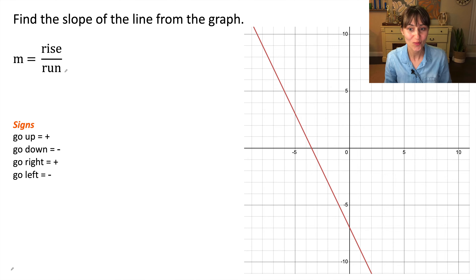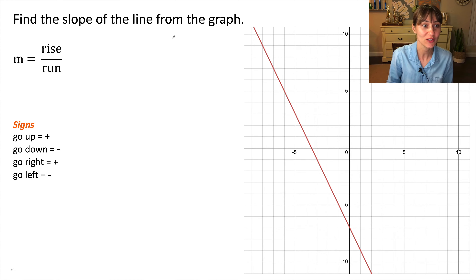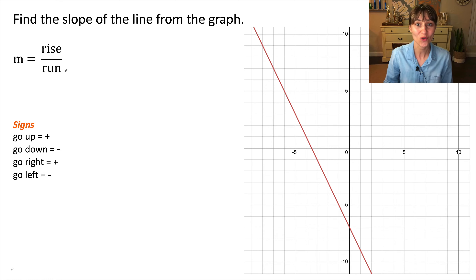To find the slope of a line from the graph, we will use this formula: rise over run.